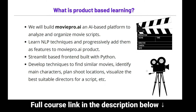MoviePro.ai is an AI-based platform to analyze and organize movie scripts. Imagine you are building an AI-based platform for major production houses like Paramount Pictures, Disney, or Universal Studios — they'll have quite a lot of movie scripts. We'll see how to build a platform to find similar movies to a given script, identify main characters for casting, plan shoot locations, and visualize the best suitable directors for a given script. We'll learn NLP techniques and progressively add them as features to the MoviePro.ai product.